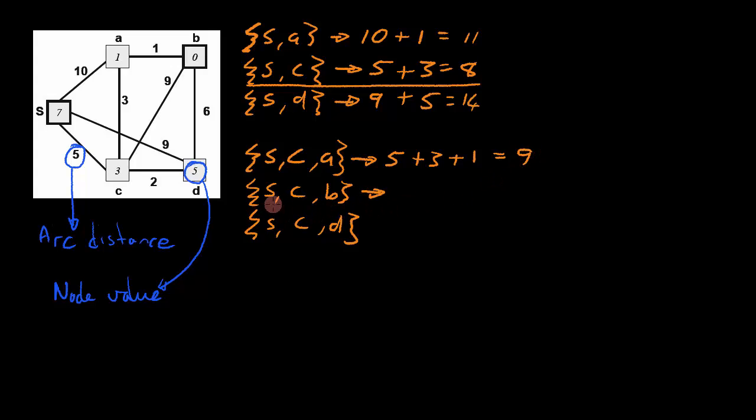In order to calculate the distance of path S, C and B, we add the arc distance between S and C, which is 5. The arc distance between C and B, which in this case is 9. As well as the node value of B has a node value of 0 since it's the goal, so we add 0 in there. 5 plus 9 gives us 14.